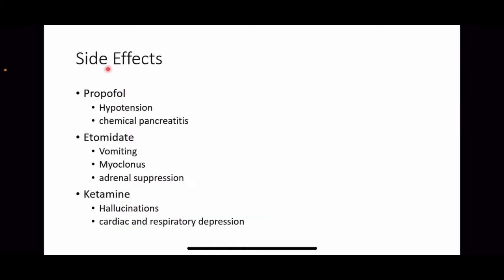Now let us see about the side effects of intravenous anesthetic agents. Propofol can cause hypotension and chemical pancreatitis. Etomidate can cause vomiting, myoclonus, and adrenal suppression. Etomidate can also cause hallucinations, cardiac depression, and respiratory depression.